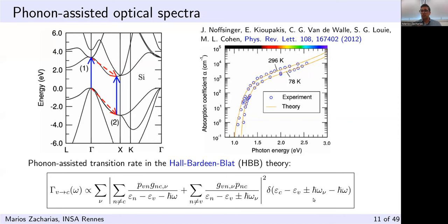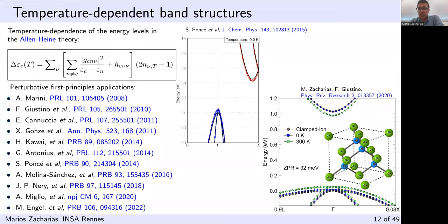The Holst-Blatt expression has, inside the square modulus, two terms describing the two possible paths an electron can follow to complete an indirect transition: p for optical matrix elements representing a direct transition, and g for electron-phonon matrix elements connecting an indirect transition. The denominators contain electronic energies, photon frequencies, and phonon energies. The delta function ensures energy conservation. The authors obtained excellent agreement with experiment, but had to rigidly shift their spectra because temperature dependence of energy levels doesn't enter the delta function.